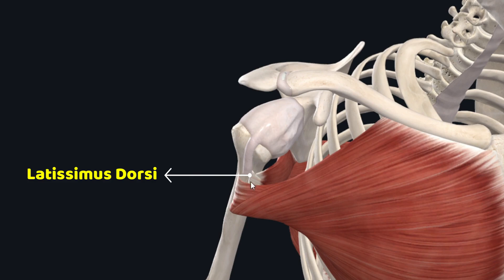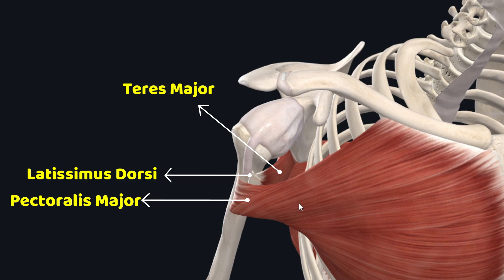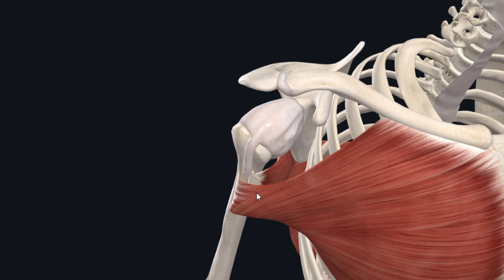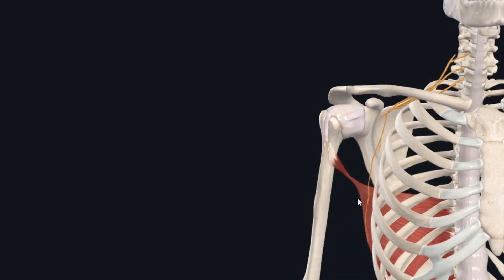The tendon of the latissimus dorsi muscle inserts into the intertubercular sulcus of the humerus between the teres major muscle and the pectoralis major muscle. The pectoralis major muscle inserts on the lateral lip of the intertubercular groove, just lateral to the latissimus dorsi, while the teres major muscle inserts on the medial lip of the intertubercular groove, just medial to the latissimus dorsi.